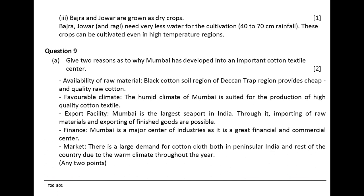Question 9. Give two reasons as to why Mumbai has developed into an important cotton textile center. Availability of raw material: the black cotton soil region of Deccan Trap provides cheap and quality raw cotton. Favorable climate: the humid climate of Mumbai is suited for the production of high quality cotton textile. Export facility: Mumbai is the largest seaport in India, through which importing of raw materials and exporting of finished goods are possible. Finance: Mumbai is a major center of industries as it is a great financial and commercial center. Market: there is large demand for cotton cloth both in peninsular India and the rest of the country due to the warm climate throughout the year.